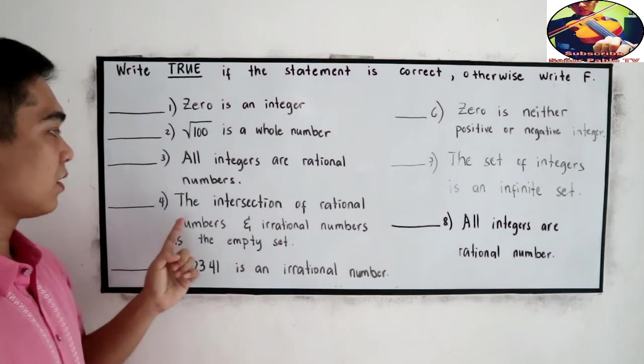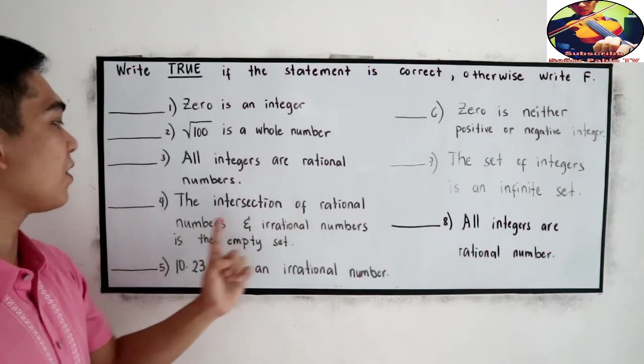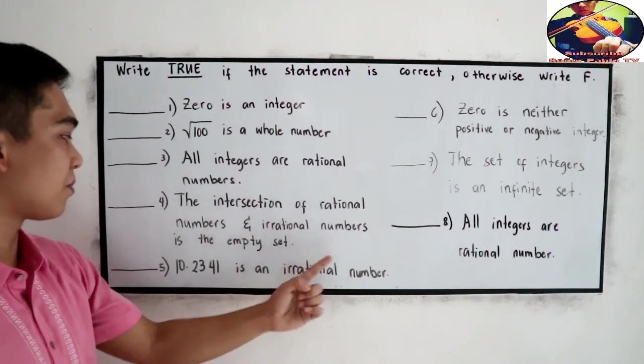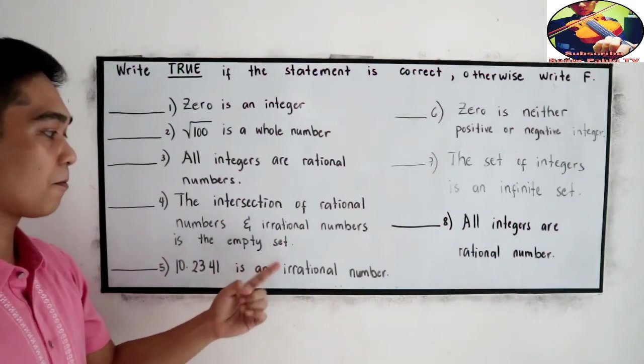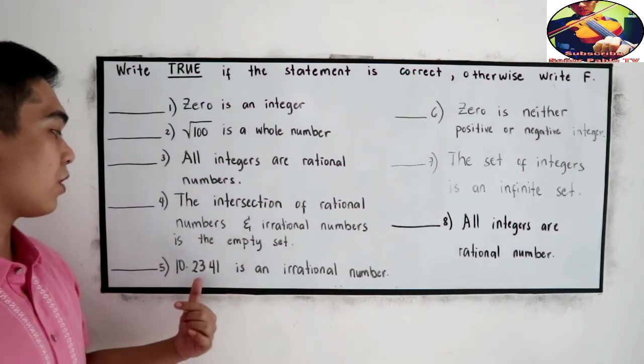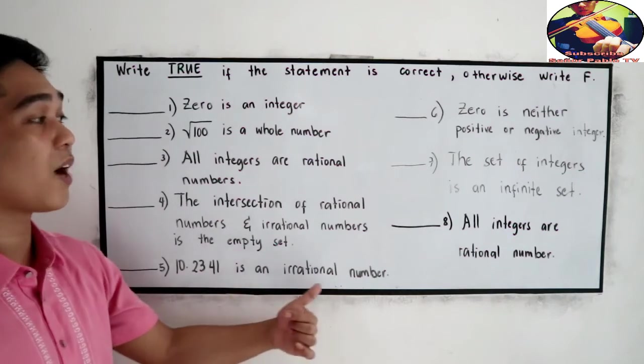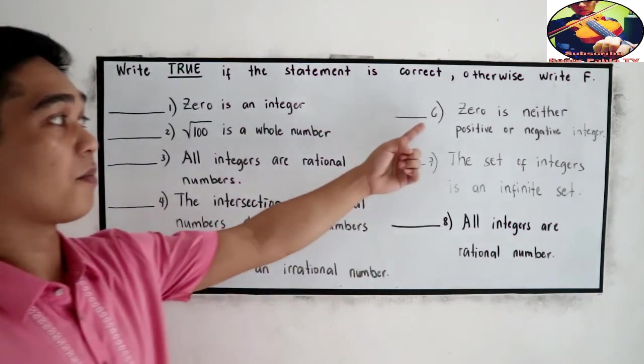Number 4, the intersection of rational numbers and irrational numbers is the empty set. Number 5, 10.2341 is an irrational number.